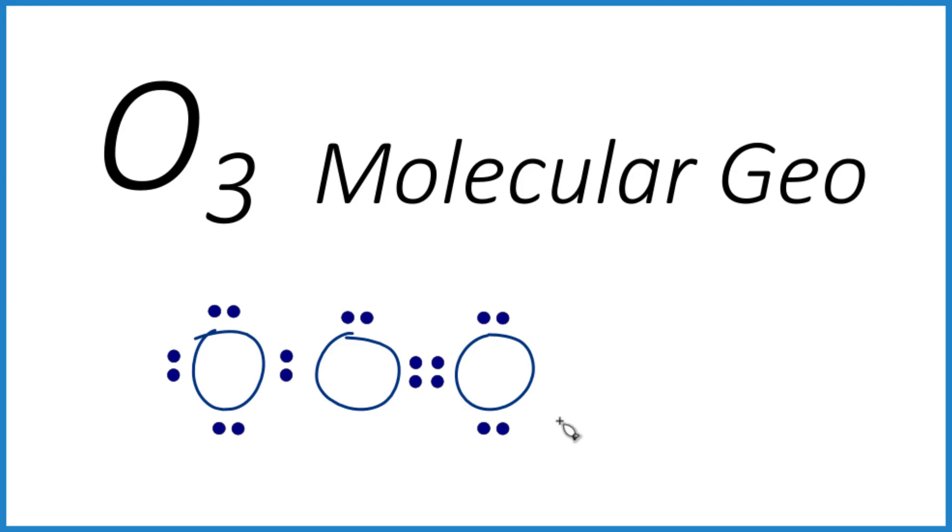We could also figure out the molecular geometry for ozone with the AXE notation. So A is the central atom. We have one of those. X, the number of atoms attached. We have one, two. And E is the number of lone pairs on the central atom.